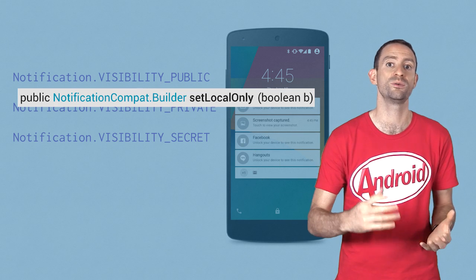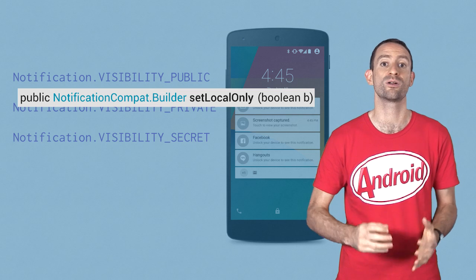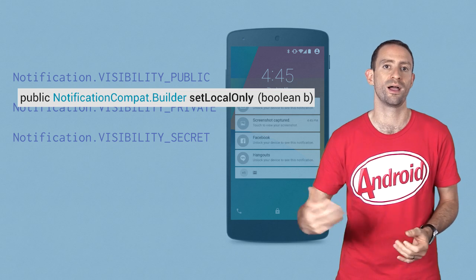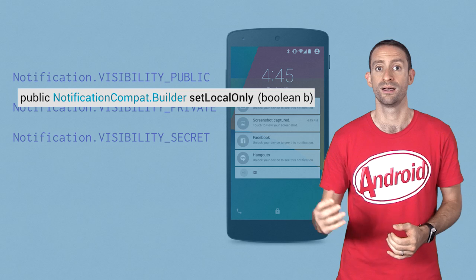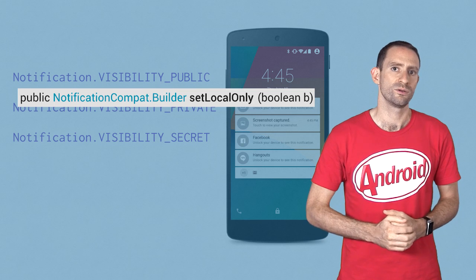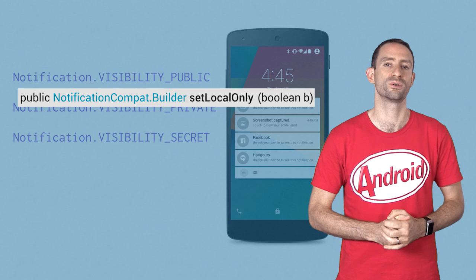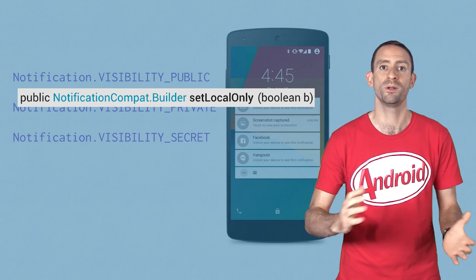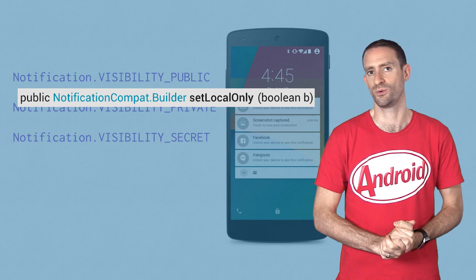The L developer preview doesn't have its own API level, and apps built against it cannot be uploaded to Play. We'll be incrementing the API level later on in the year for the L release, so if you check your SDK manager, you'll see there are two new SDK versions available: 4.4W and the L developer preview. If you're building production apps, build them against 4.4W.